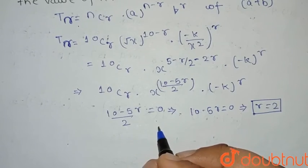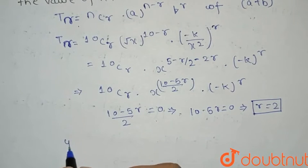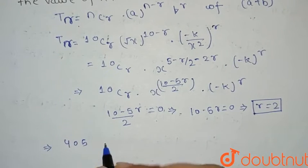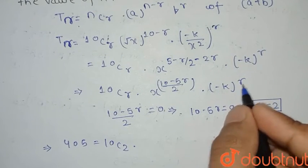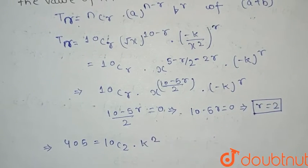Now, we have given the value of Tᵣ, that is 405. So 405 will become ¹⁰C₂ · (-k)², so it will become k². And the value of ¹⁰C₂ is 45k².